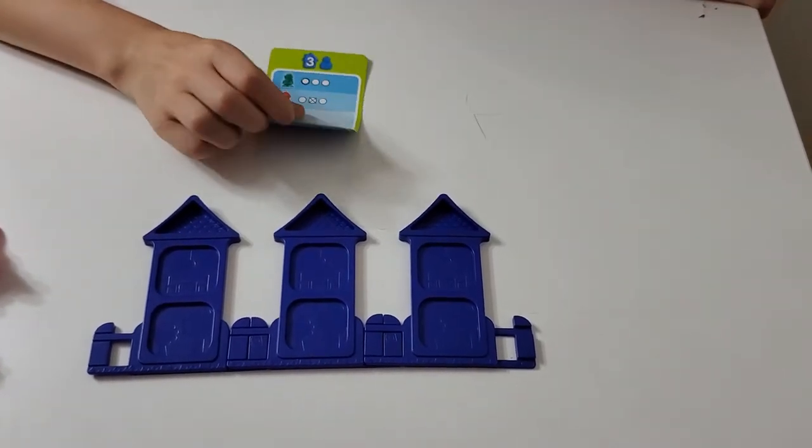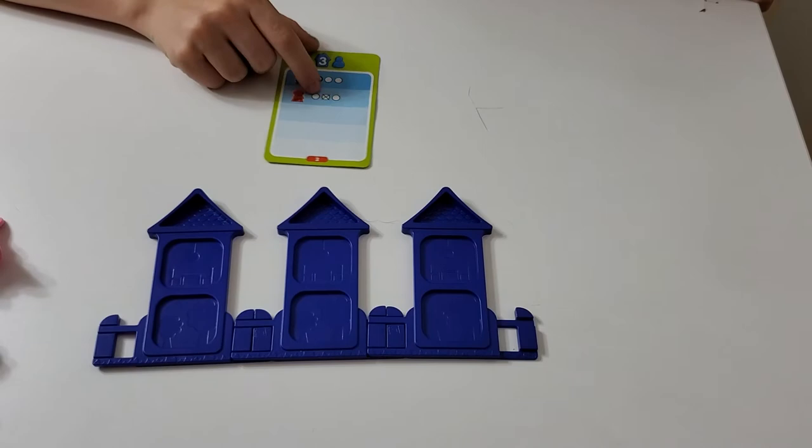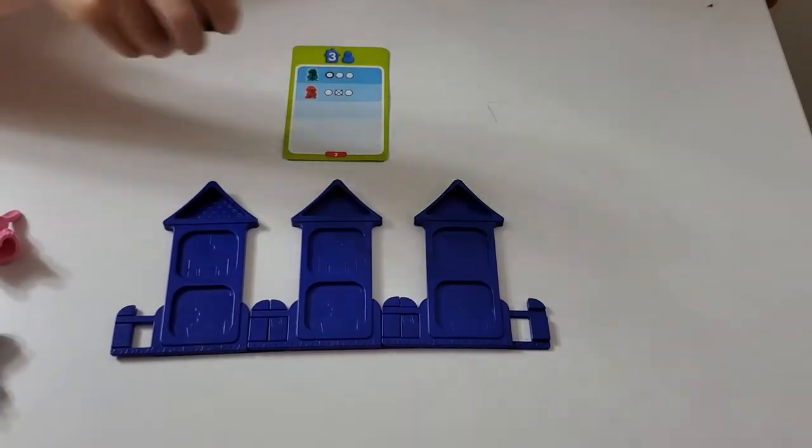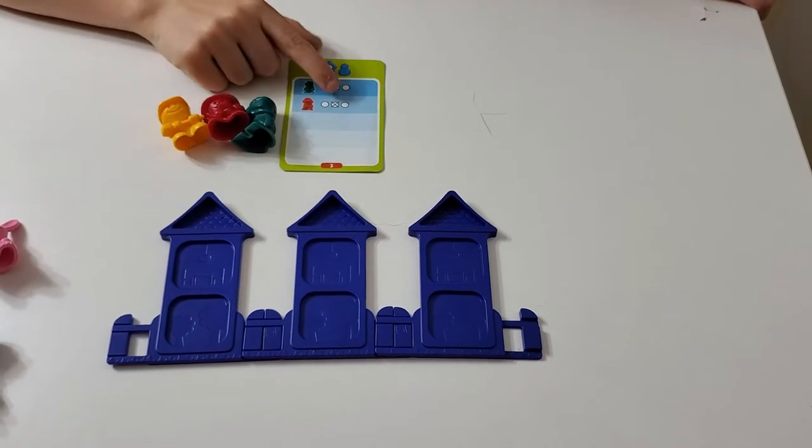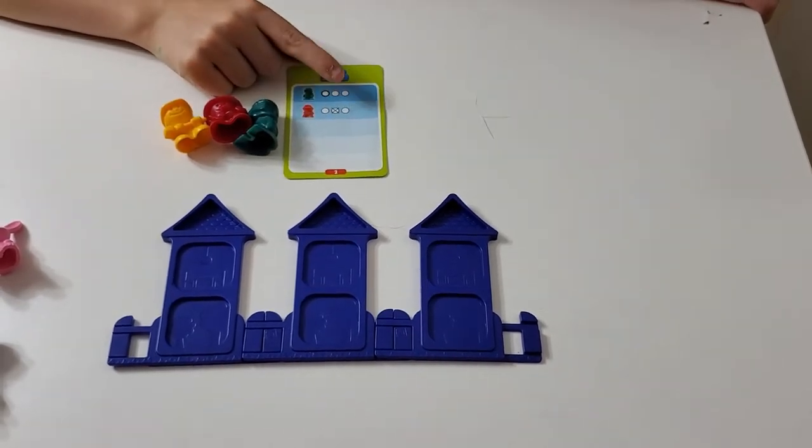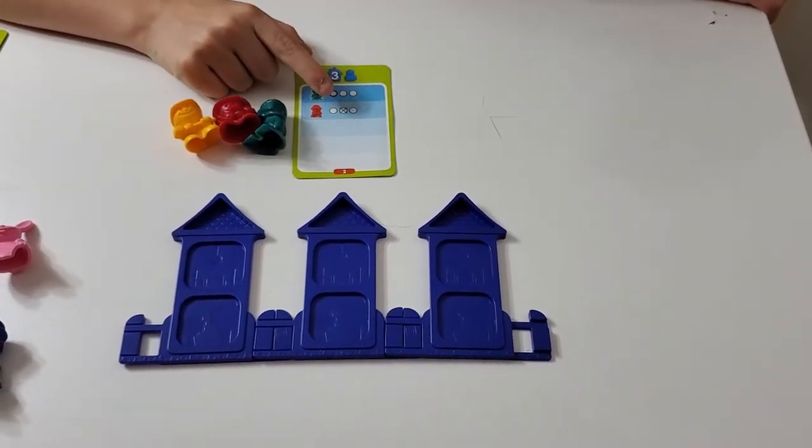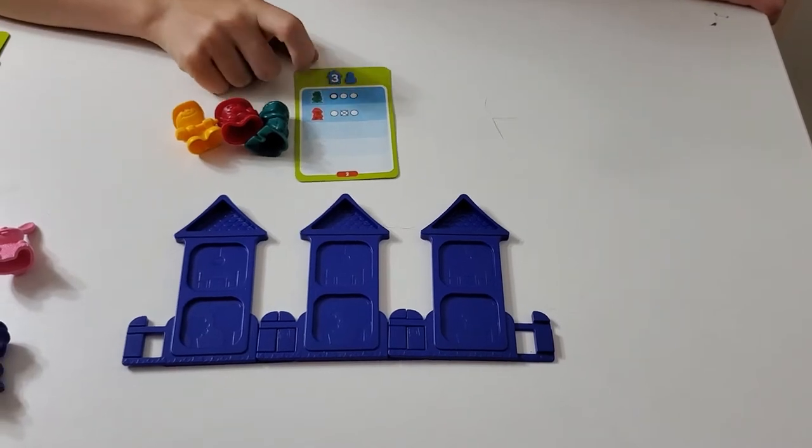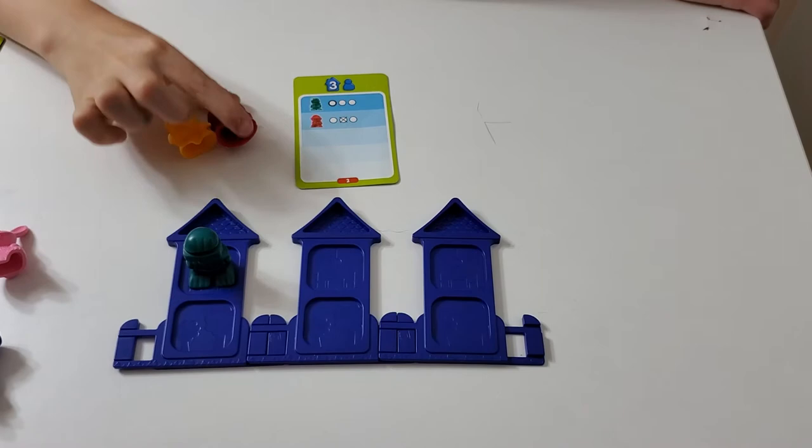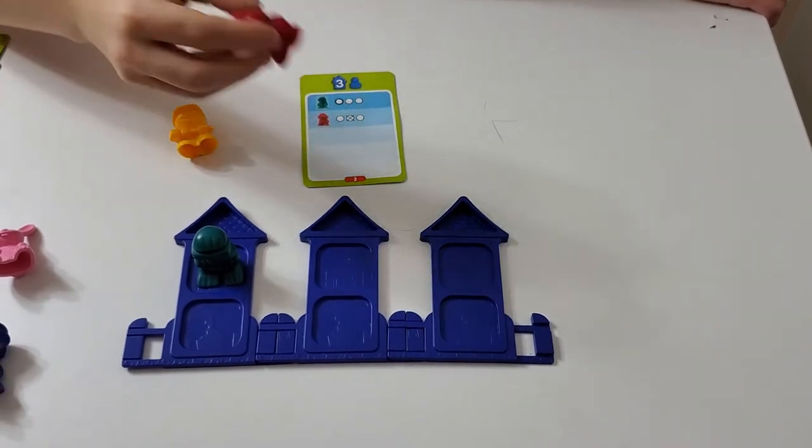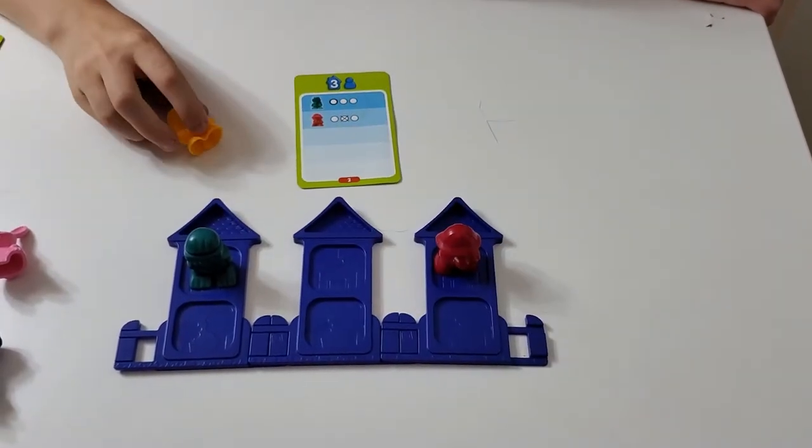The next card includes three houses and the basic people. There's a new symbol - an X. That means it does not go there. It can go either here or here, but the green one goes here. The red one can't go here so it has to go here, so yellow goes here.